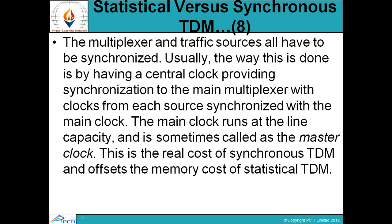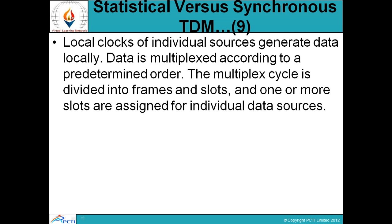The main clock runs at the line capacity and is sometimes called the master clock — यह synchronization का real cost है synchronous TDM का। Local clocks of individual sources generate data locally. Data is multiplexed according to a predetermined order. The multiplexed cycle is divided into frames and slots, and one or more slots are assigned to individual data sources — multiplex cycle को different frames और slots में break किया जाता है और उन frames को different sources को assign किया जाता है।